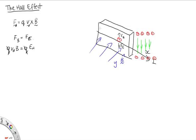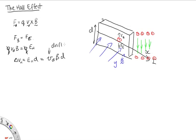What we actually measure in things such as this magnetic field sensor is the voltage difference between the top and the bottom of the metal slab. So let's call this a distance d. We know that the potential difference between two points is the electric field times the distance. So we have that the Hall voltage V_H is equal to E_H times d, which is equal to V_d B times d, where V_d is the drift velocity which comes about due to the current.